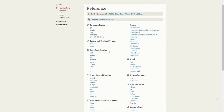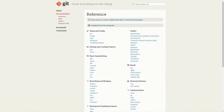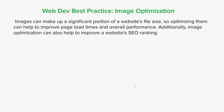The next best practice is image optimization. Images can make up a significant portion of a website's file size, so optimizing them can help improve page load times and overall performance. Image optimization can also help improve a website's SEO ranking. Some optimization best practices include choosing the right file format, compressing your images, resizing your images, using descriptive file names, and using a CDN to serve your images.